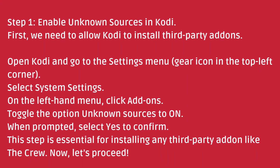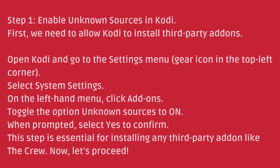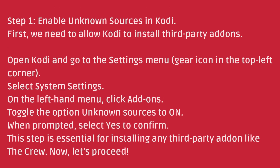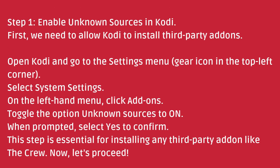Step 1: Enable unknown sources in Kodi. First, we need to allow Kodi to install third-party add-ons. Open Kodi and go to the settings menu — the gear icon in the top left corner. Select System Settings. On the left-hand menu, click Add-ons. Toggle the option Unknown Sources to on. When prompted, select Yes to confirm. This step is essential for installing any third-party add-on like The Crew.